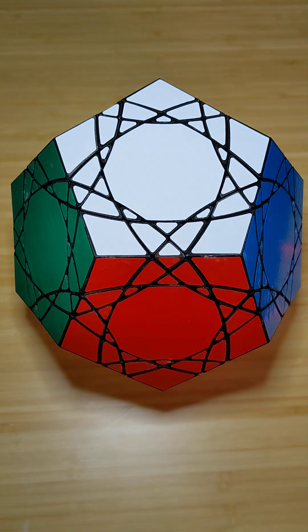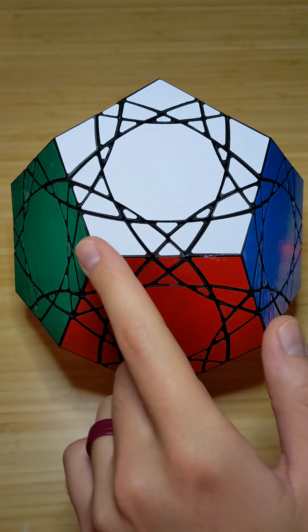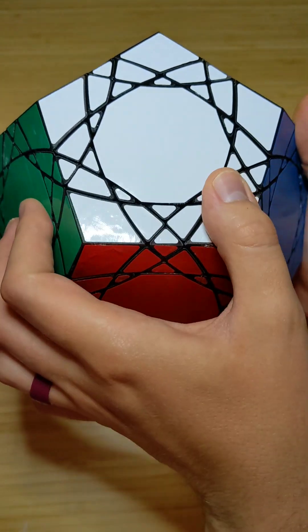Welcome, everyone. I've made another puzzle. This is the Radio Flare, or Radio 6 Dodecahedron. It's a Radiolarian 6 in the shape of a Dodecahedron, and the corners turn like this.